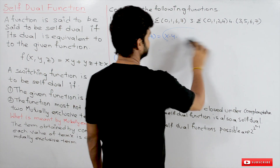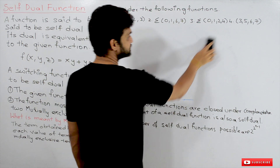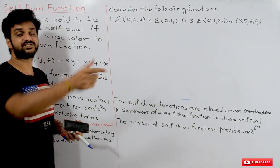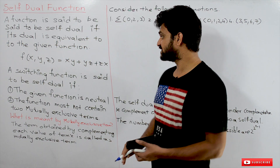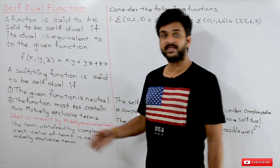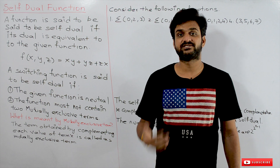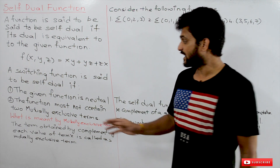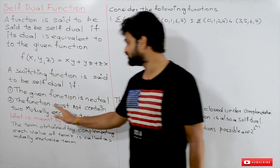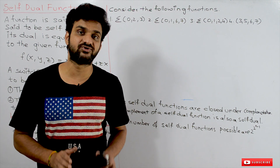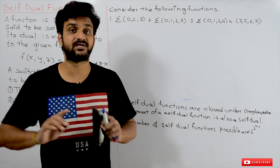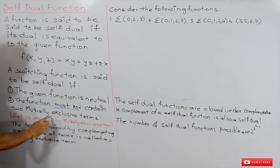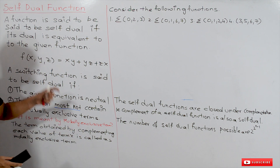So how do we determine that a function is self-dual? There is another, easier way to determine it. A switching function is said to be self-dual on what basis? The given function must be neutral. The function must not contain mutually exclusive terms — this is very important.